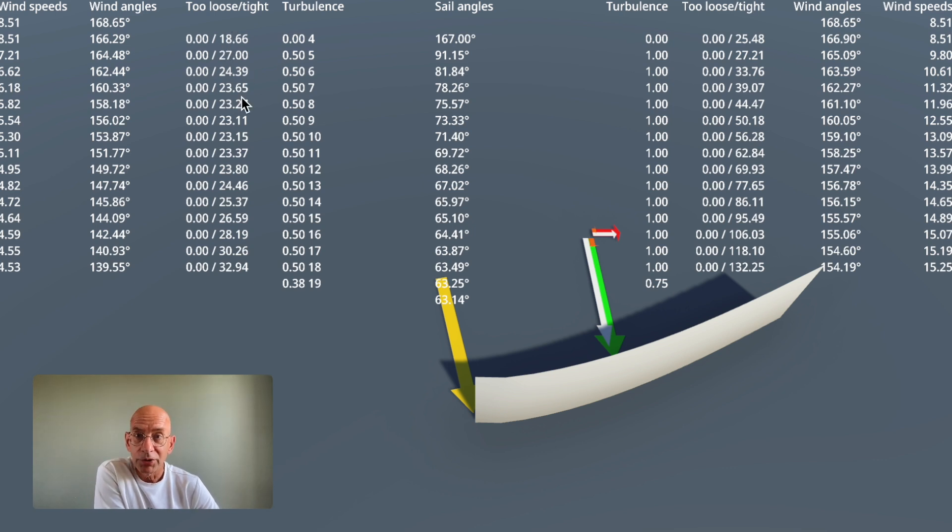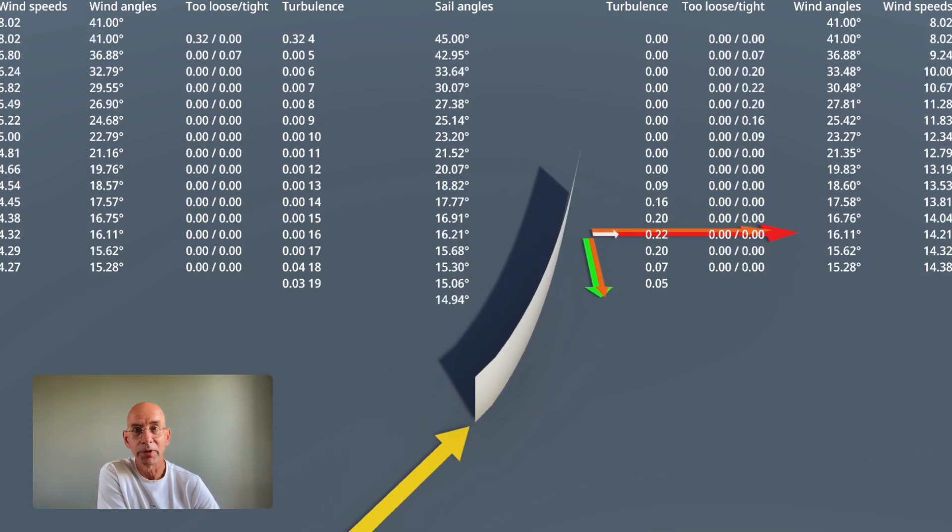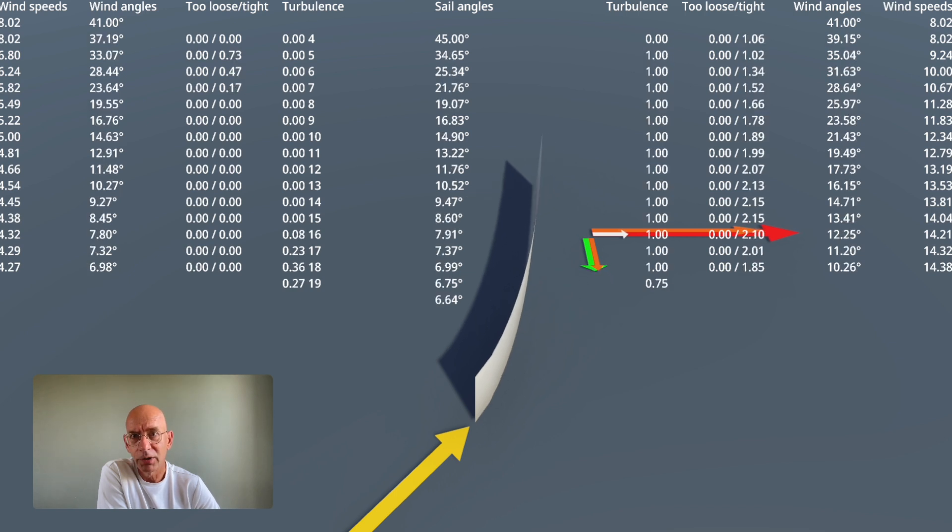So here you can see what happens when, for instance, the wind is coming from behind. But if I make it 45 again and I pull the sheet, you can see the numbers go up and here as well it loses the wind on the outside and wind stalls here as well. So that's how it works and the result is a force in Newtons that I apply to the boat.